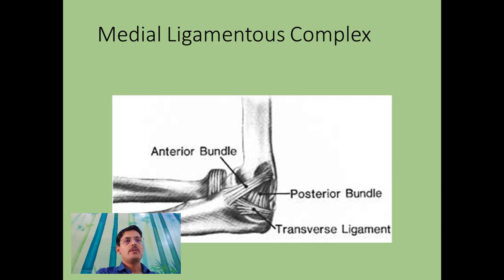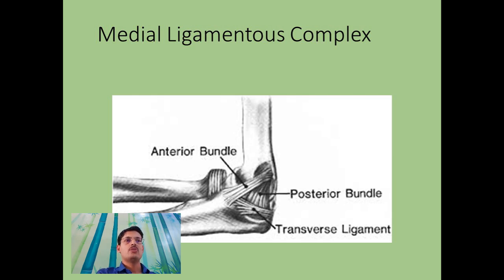The medial ligamentous complex — also called the ulnar collateral ligament or medial collateral ligament — is the primary restraint to valgus instability. Even if you have a fracture of the radial head, it will not cause instability unless you have a tear of the ulnar collateral ligament. The anterior and posterior bundles together also contribute to some posterior medial rotatory instability, but that is a minor role.